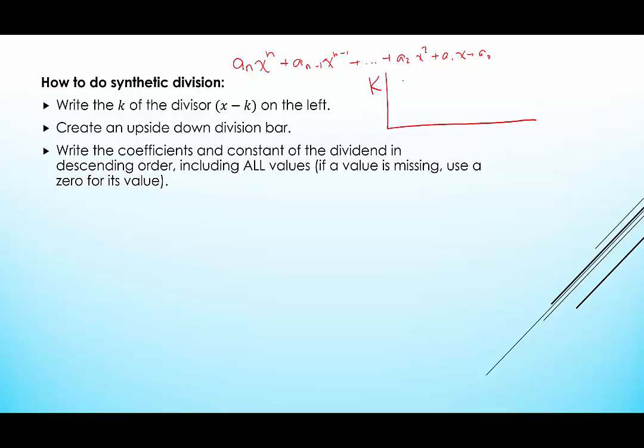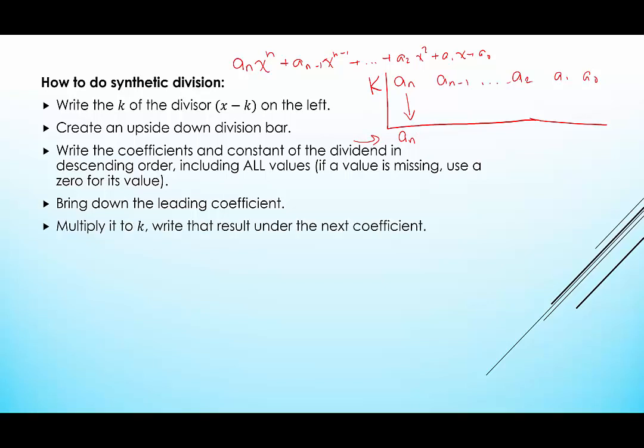Notice there's going to be a little gap underneath it. So we're going to say a sub n, a sub n minus 1, whatever other coefficients there are. If you need to put a zero, you put a zero there, a sub 2, a sub 1, and a sub 0. Next, we bring down the leading coefficient. We move this straight down underneath our division sign. This is where the quotient would be.